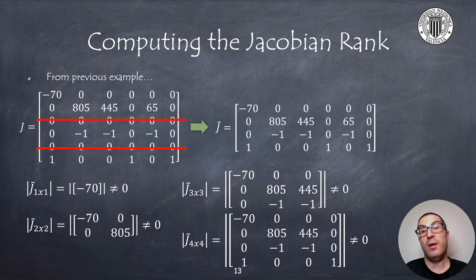For example, following with the previous example we already know that the Jacobian matrix had 2 rows with zeros and therefore we can remove those rows from the original matrix. And then we realize that there's at least one element which is different from zero, so at least we know the rank will be at least one.